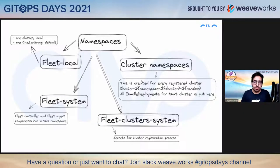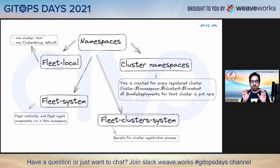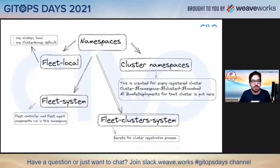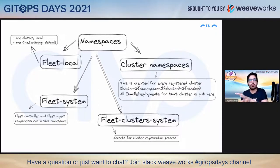Before diving into architecture, let me touch on the namespaces that get created when Fleet is installed as a Helm chart on a Kubernetes cluster. It creates certain namespaces. First is fleet-local, which is created with one cluster — the initial cluster where Fleet is running. It will have one cluster which is local and one default cluster group, so those two things will already be pre-created for you.